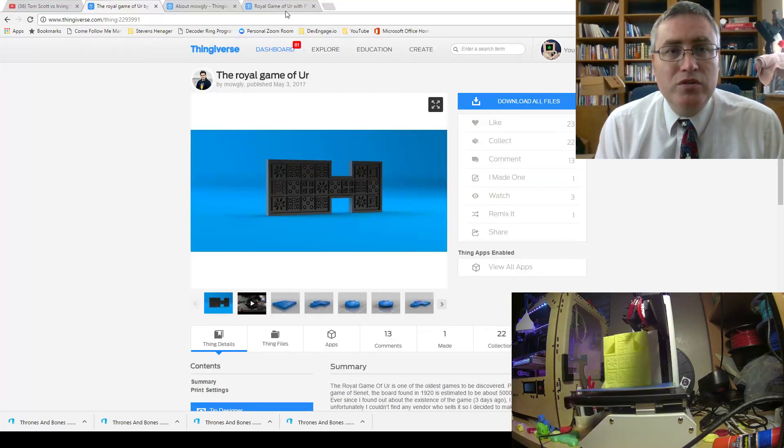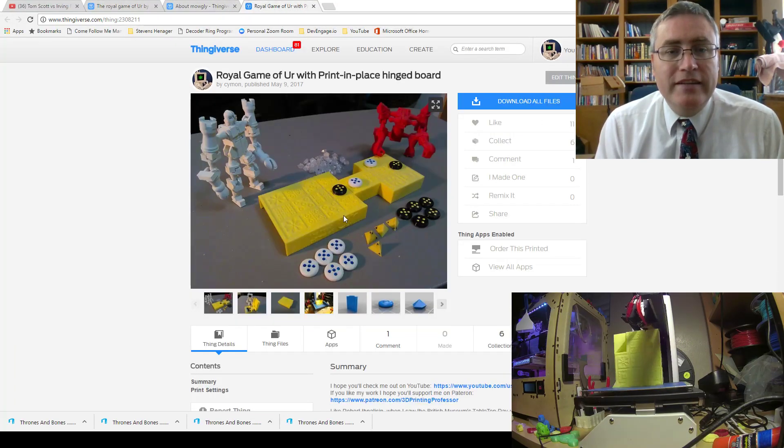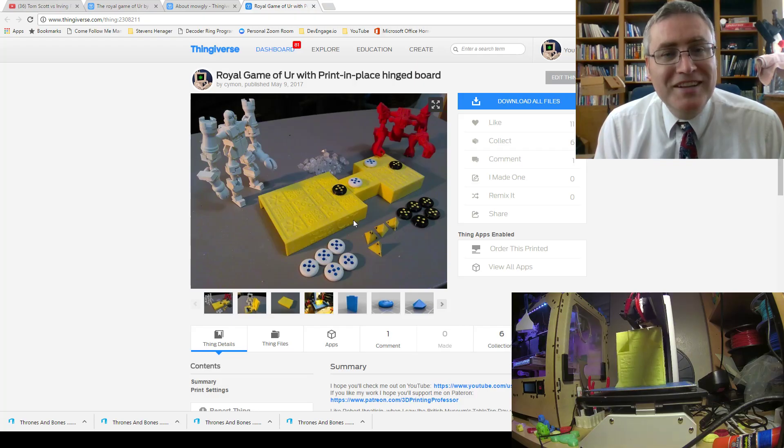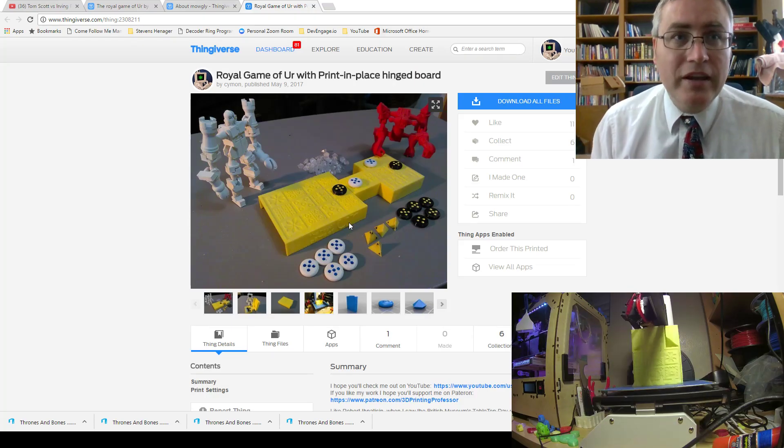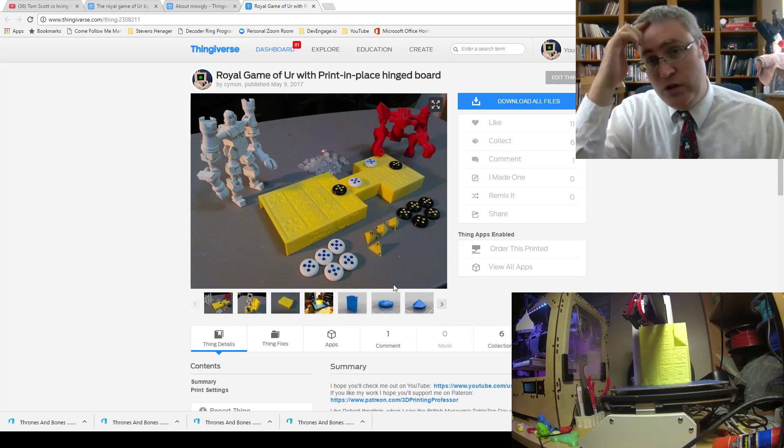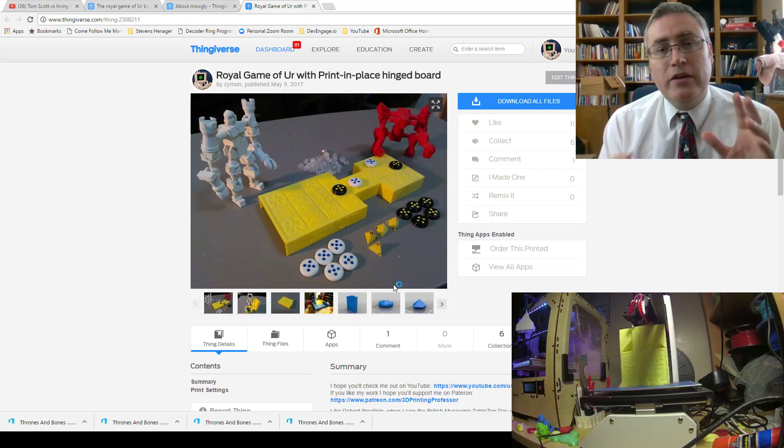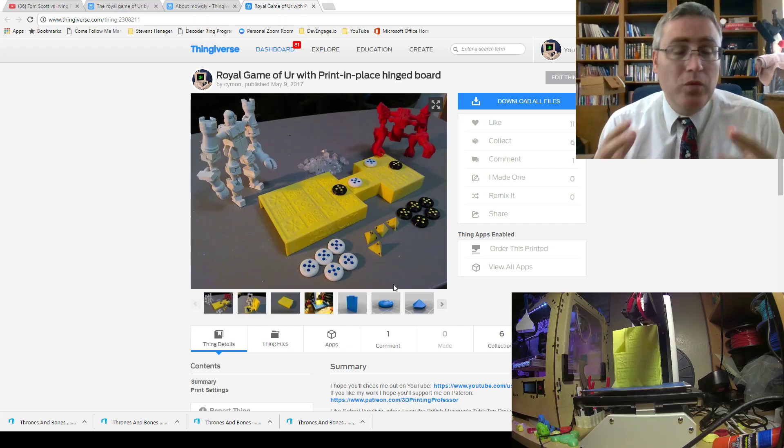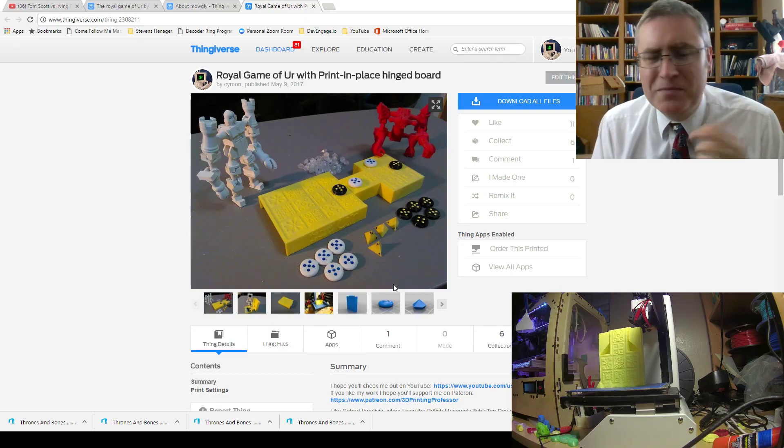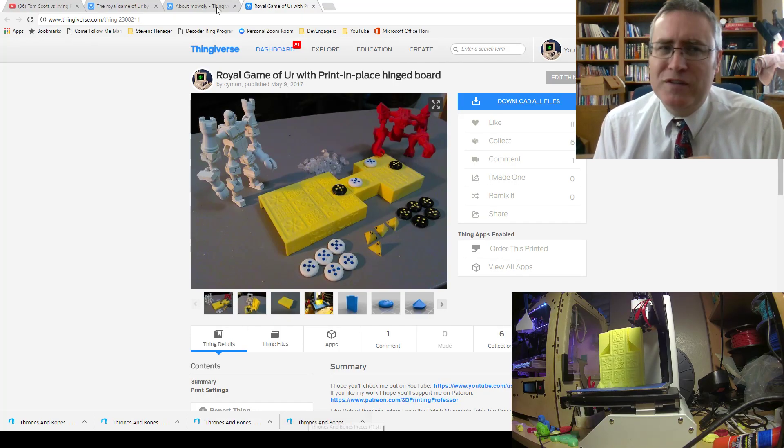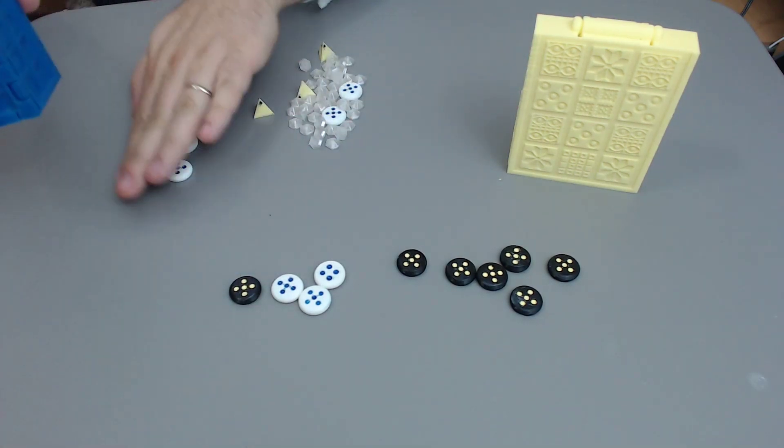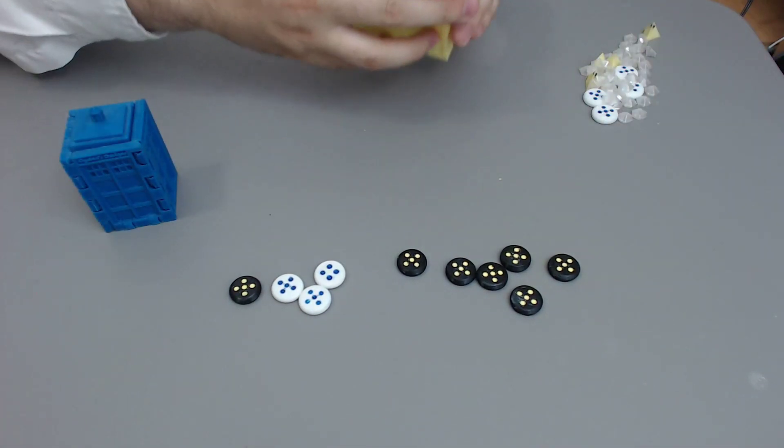You can go to Thingiverse and download my version of it right here. I'm just trying to vamp until the end of the print here. As soon as that print finishes down there, we're going to jump over back to the board and talk a little bit about the similarities and differences between Ur and Tardis Run and why those similarities and differences are there. Okay, so there's the print done! Pop it off the build plate and it opens up. It hardly needs any cleanup whatsoever. So cool.